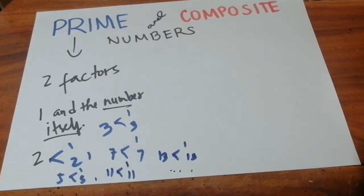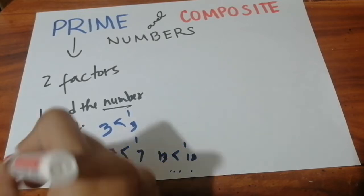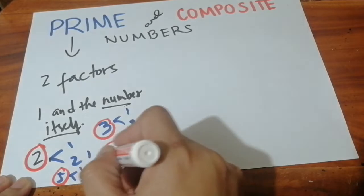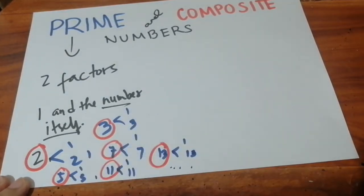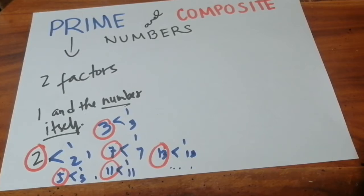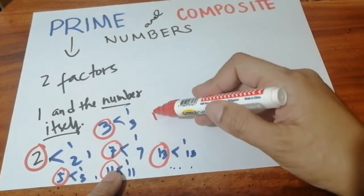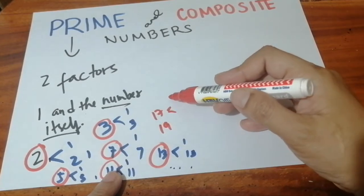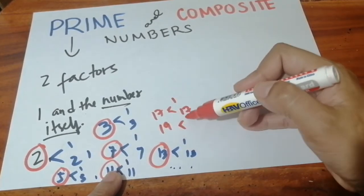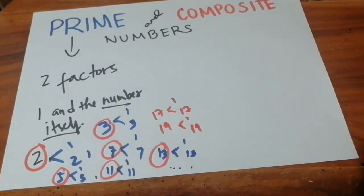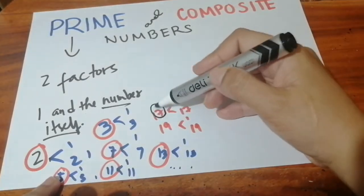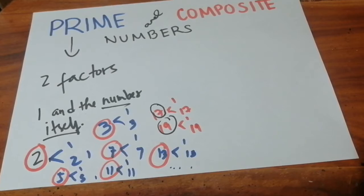Thirteen is one and thirteen, and so on and so forth. These examples I've discussed are the common prime numbers — they are the first six prime numbers. Actually, the prime numbers from one to twenty also include seventeen and nineteen. The factor of seventeen is only one and seventeen, and nineteen is also one and nineteen. So these are the first eight prime numbers.